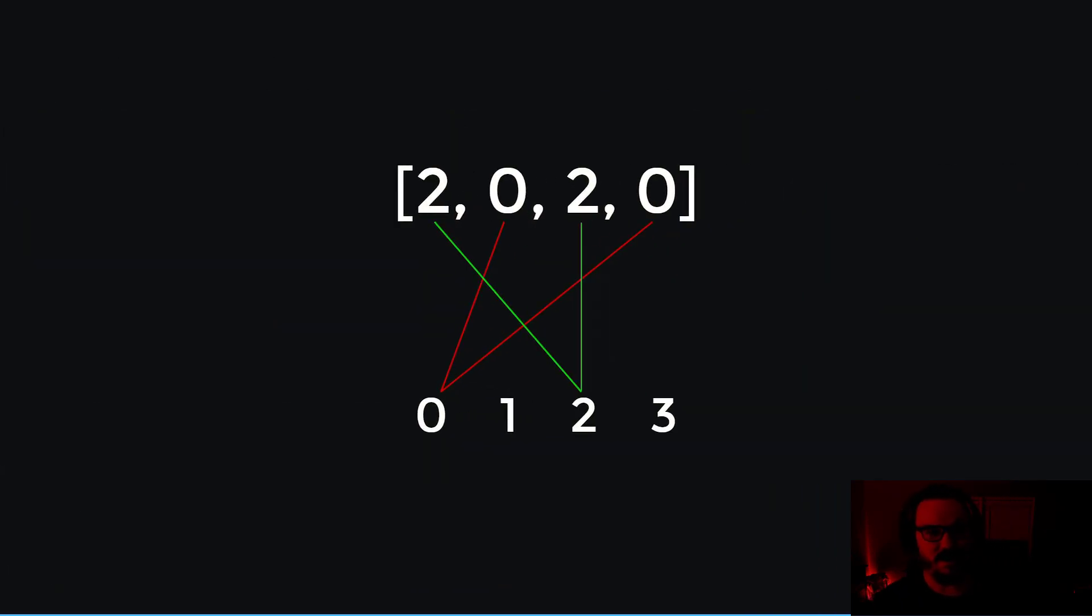So again, we have 2020, and I've broken it up into something that looks kind of like an array. We have an array of numbers here, 2, 0, 2, 0, and below it, I have the indexes or the indices for each of these values.